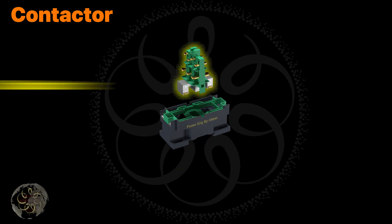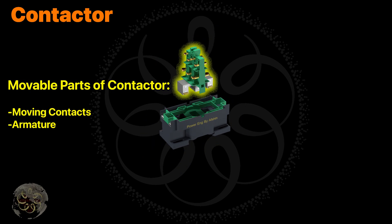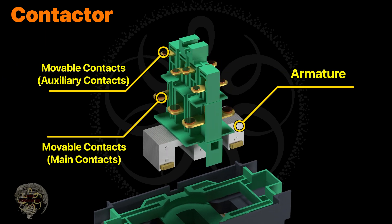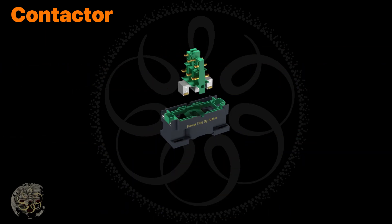Here you can see the movable part of the contactor. The movable contacts are attached to the armature and move together with it. The armature is a movable piece of ferromagnetic material that is attracted to the core when the coil is energized.